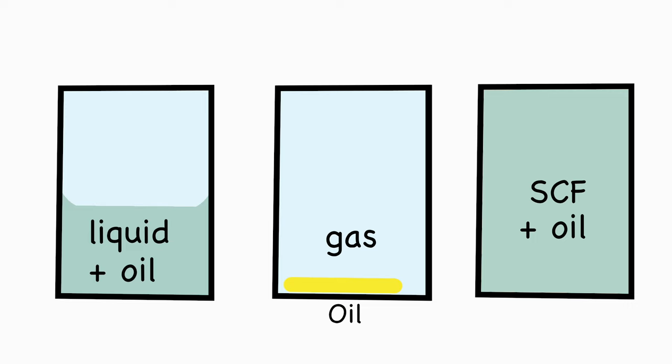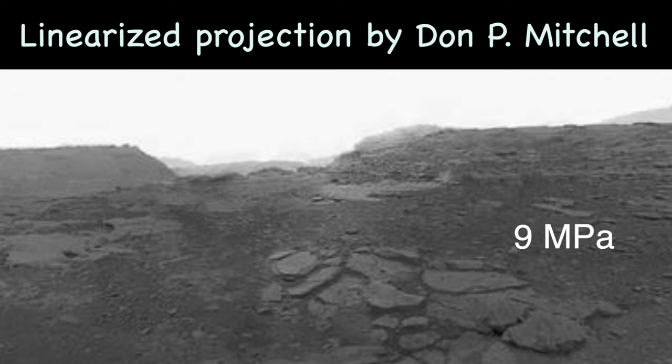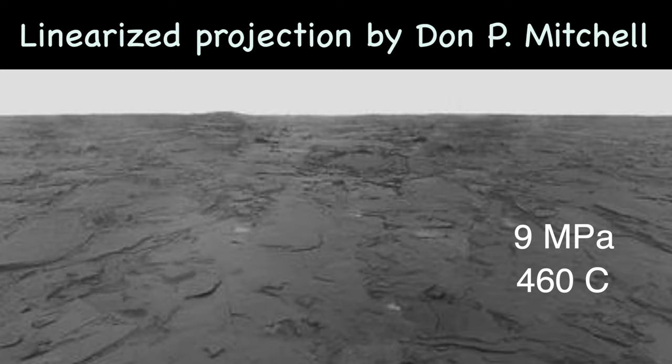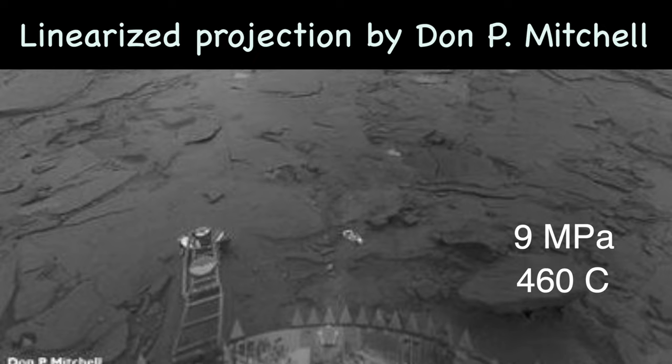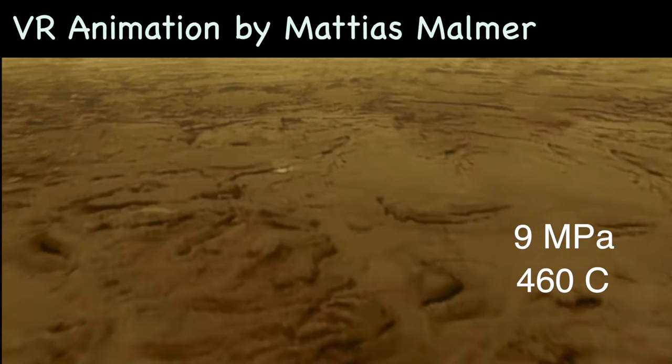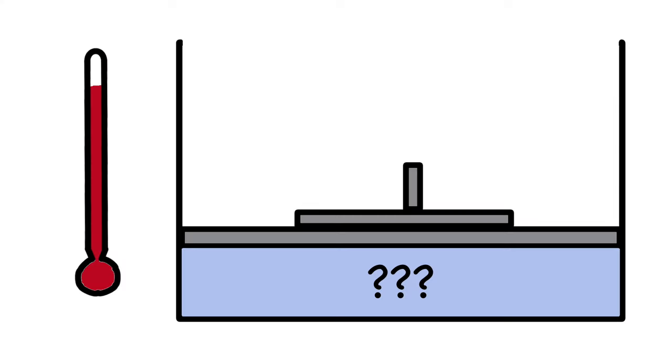The atmosphere on Venus is supercritical carbon dioxide. The surface of Venus is 9 megapascals and 460 Celsius. Together, this is high enough for carbon dioxide to be in a supercritical state. We can see that the Venus atmosphere is maybe a little yellow, but clearly transparent.